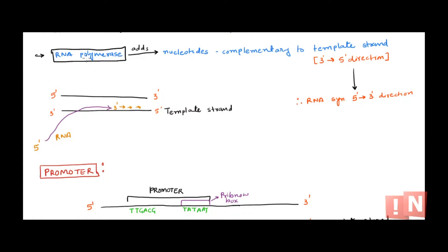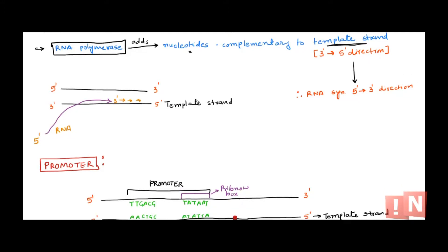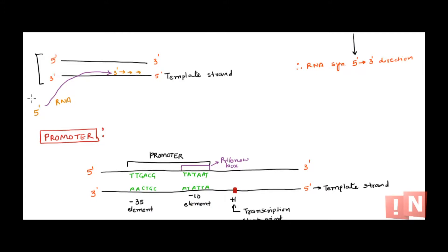RNA polymerase can add nucleotides complementary to the DNA template strand. Now, what is this template strand? DNA is double stranded. When it comes to RNA production, it is not that both strands of DNA get transcribed — only one strand, because RNA is a single-stranded molecule. The one strand which gets transcribed and has all the information to produce RNA is called the template strand, and this is also called the non-coding strand.